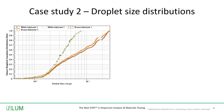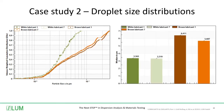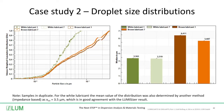Here we can see the results — the volume-weighted cumulative distribution curves. For the white lubricant, it's a perfect match of the duplicate. For the brown lubricant, we record a few deviations between the two curves. The median value is 3.3 micrometers for the white lubricant, and the median value for the brown lubricant is between 5.6 and 6.4 micrometers. An impedance-based method for particle size distribution characterization was also used for the white lubricant, giving an X50 of 3.5 micrometers, which is in good agreement with the LumiSizer result.